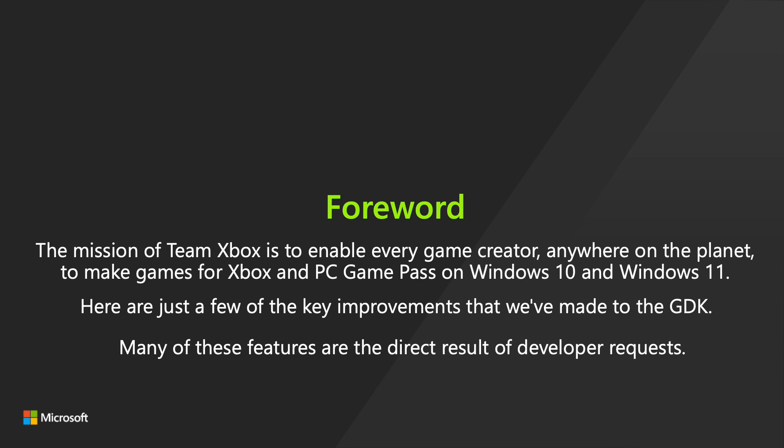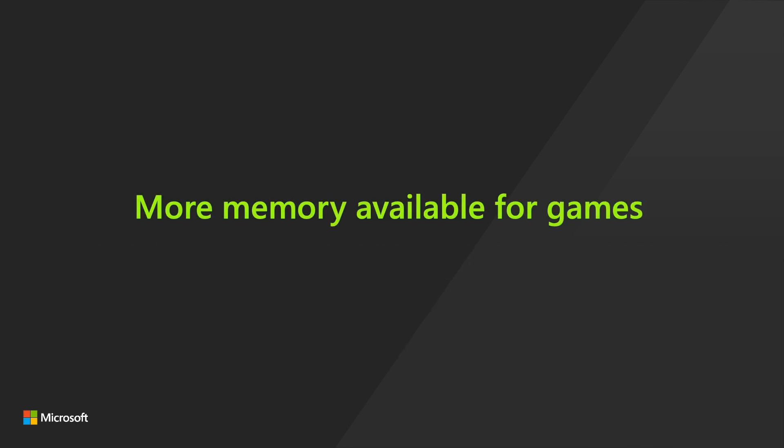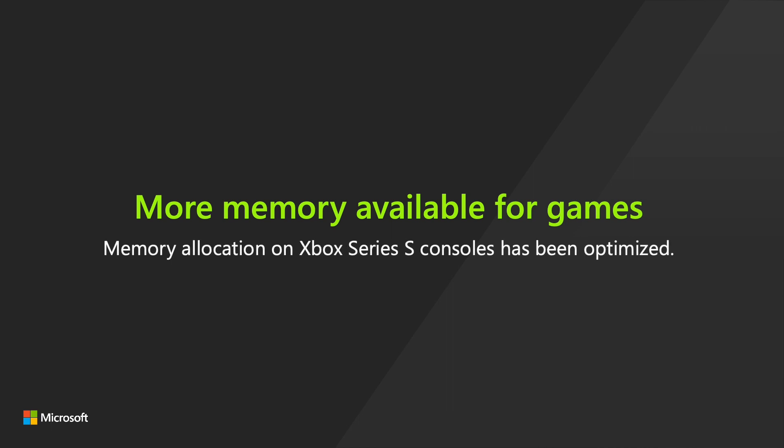In addition to many bug fixes, this release includes the following new features. More memory available for games: in the June GDK, additional memory is available for Xbox Series S consoles. Hundreds of additional megabytes of memory are now available to Xbox Series S developers, giving developers more control over memory, which can improve graphics performance in memory-constrained conditions.